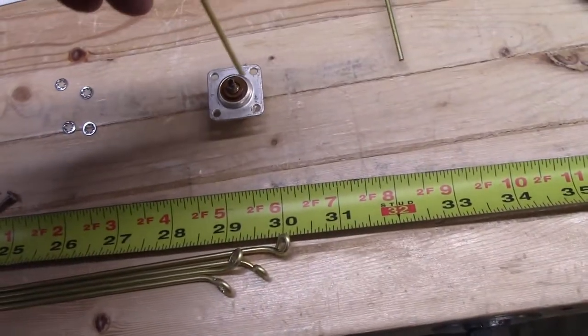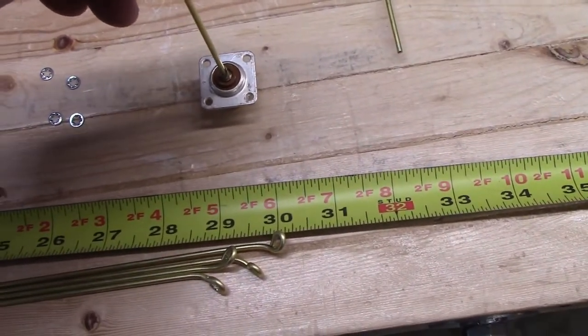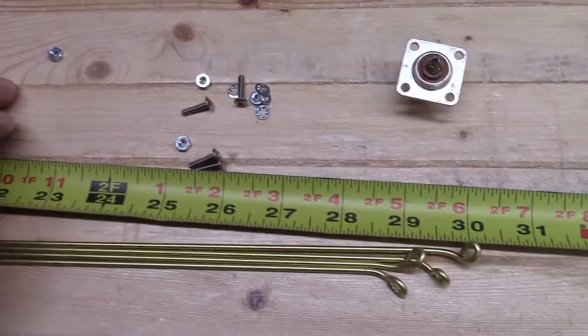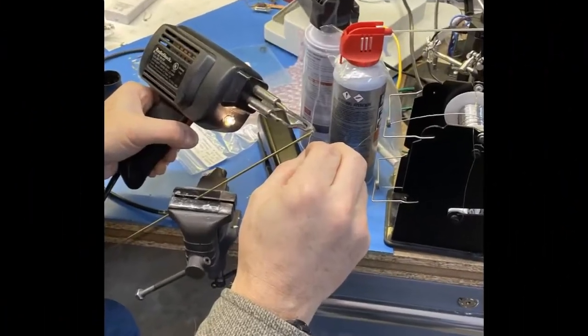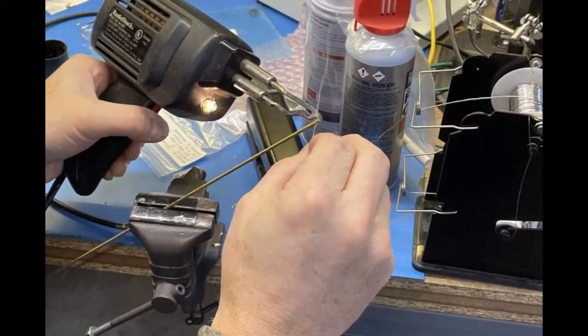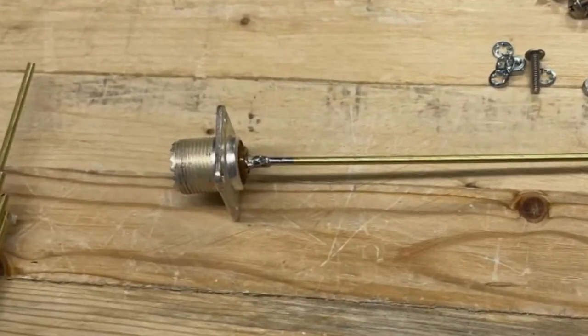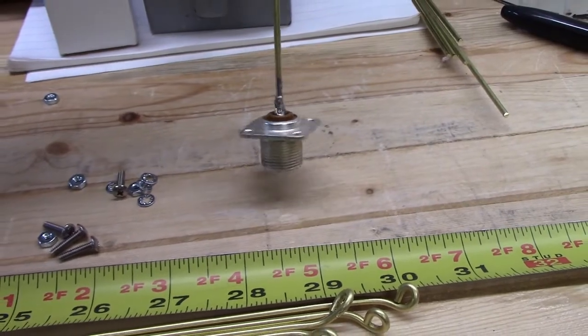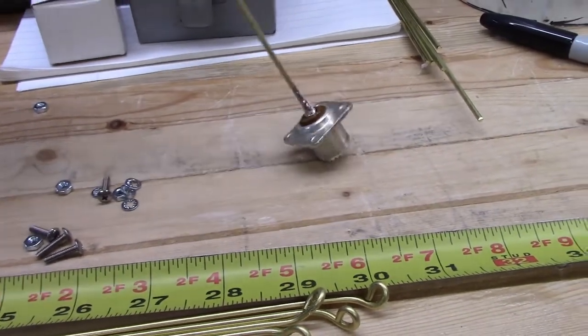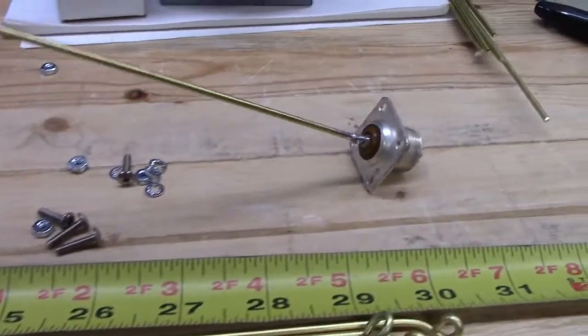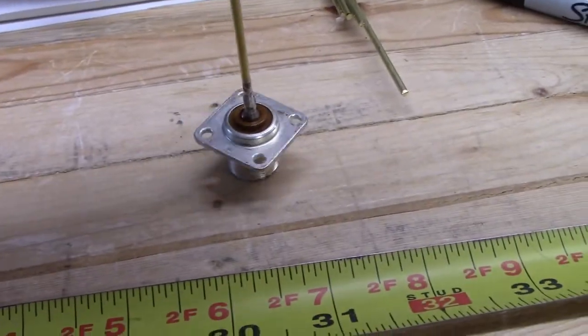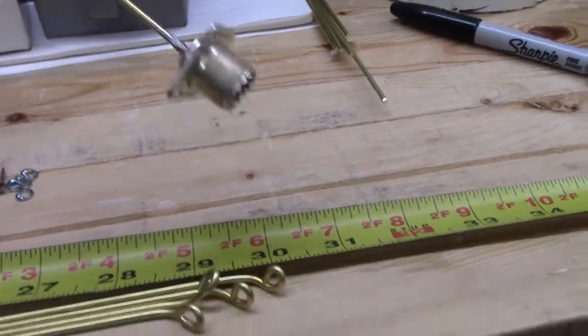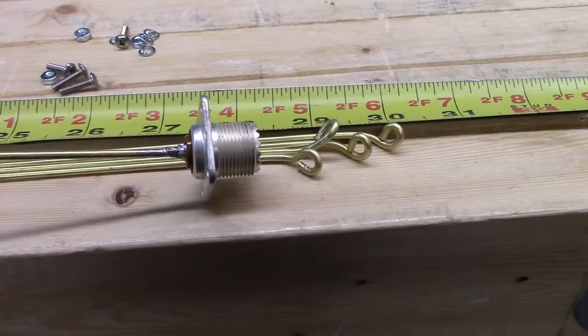We're going to solder our center conductor in place and then assemble the radials with our screws. So we got the center vertical portion now soldered to our SO239, AKA UHF female connector. Now we're going to assemble it with its radials.